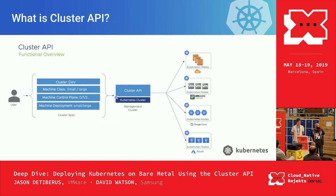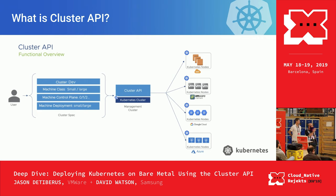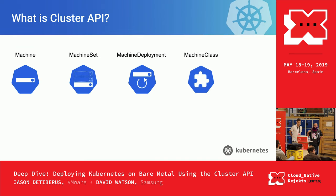Basically, a user provides some declarative config, passes it to Cluster API, and at the back end you get a cluster — ideally across various different cloud providers and infrastructures. The declarative API is made up of four different types: the Machine, the MachineSet, the MachineDeployment, and the MachineClass.